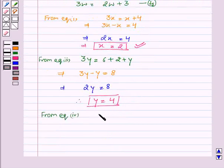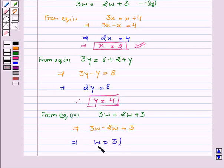From equation 4, 3w equal to 2w plus 3. We get 3w minus 2w equal to 3, which implies w equal to 3.